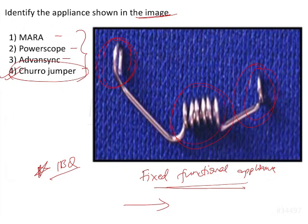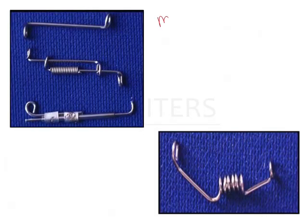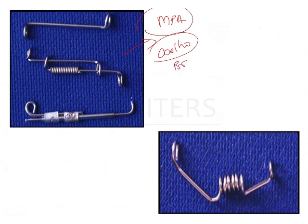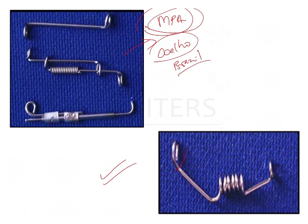The ChurroJumper was developed as an improvement of the mandibular protraction appliance (MPA), which was given by Coelho. He developed this appliance in Brazil because most advanced fixed functional appliances were not available, so they used regular chairside materials to construct it. The ChurroJumper is a modification of the MPA — a very simple, effective, and inexpensive appliance that can be constructed chairside to keep the mandible in a forwarded position.